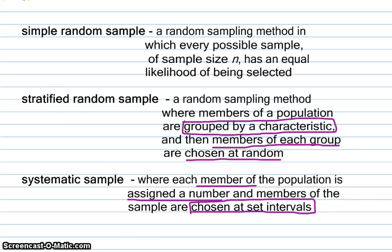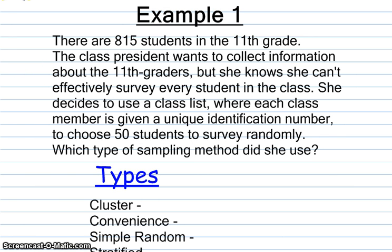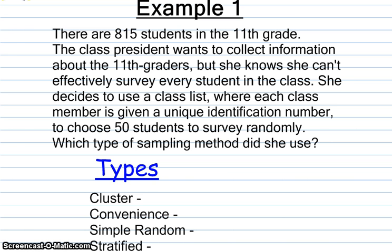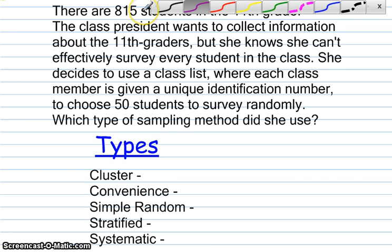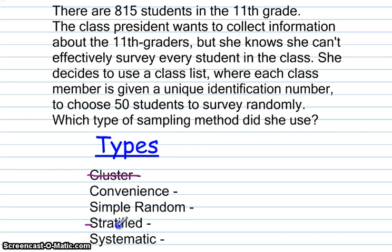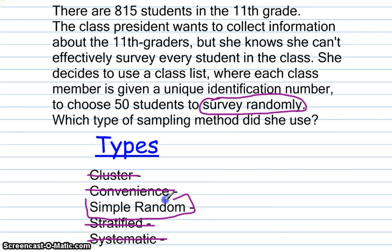Next we have a couple of examples. Read the example and see if you can determine which type of sample or survey we are talking about. We are giving them a number and there is no grouping, so we know it is not cluster and not stratified. It also says she's going to do it randomly, so it is not systematic. And she's not standing on a corner, so it is not a convenience sample. Therefore, she is performing a simple random sample.